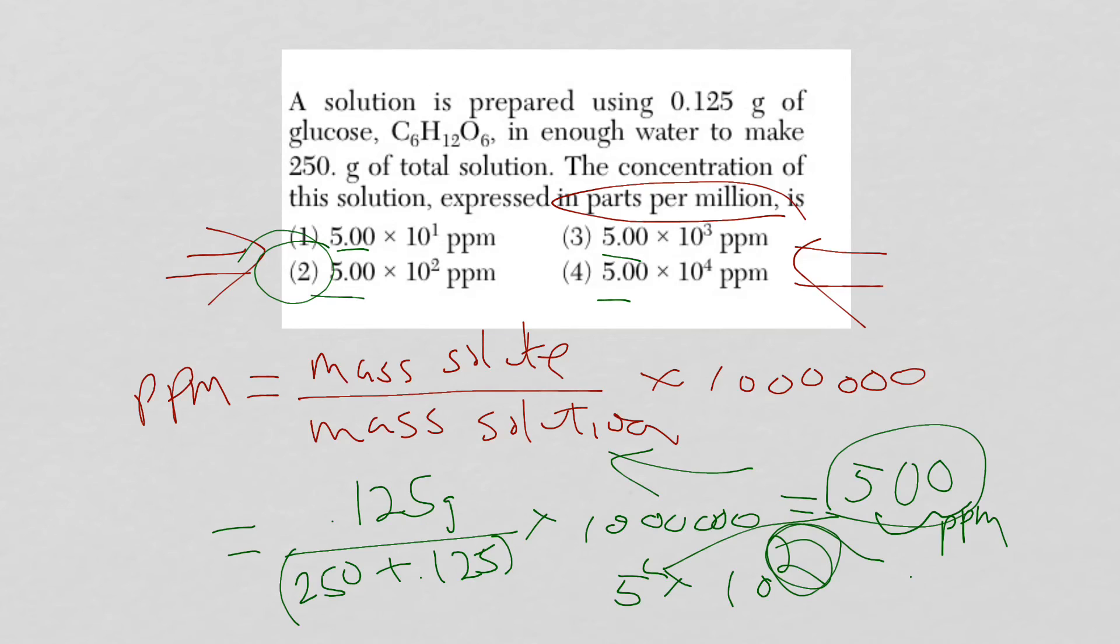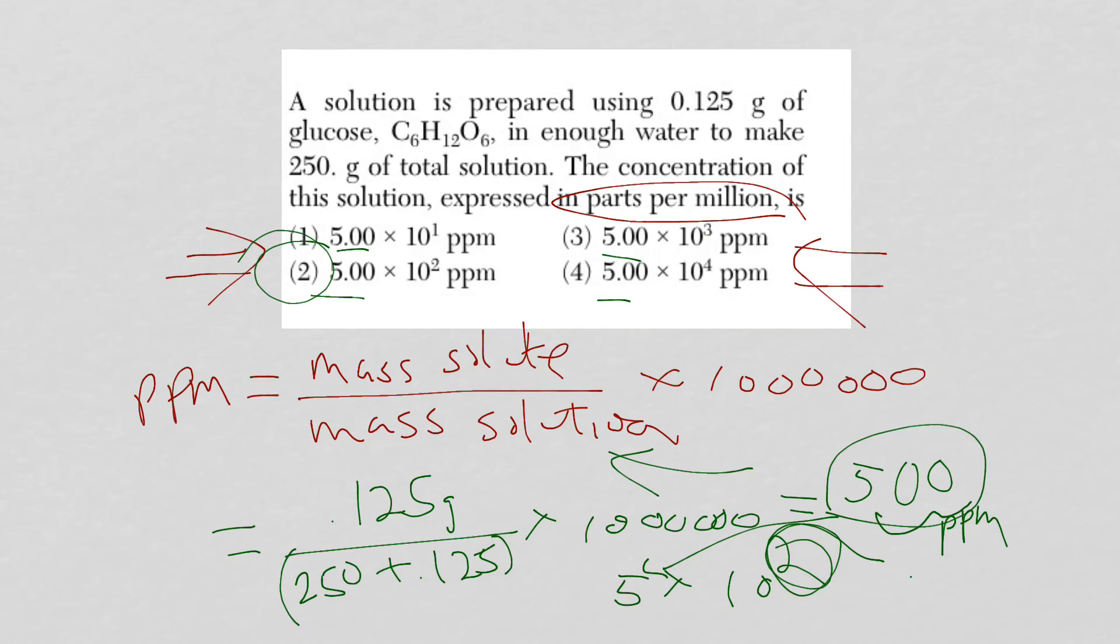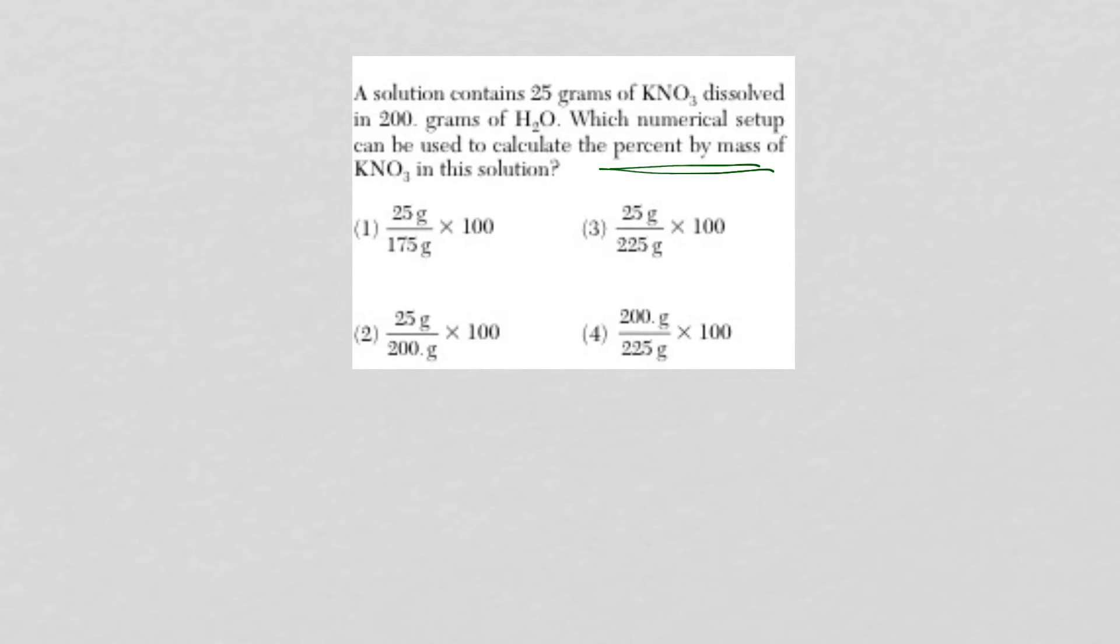So percent by mass. Well, let's go back, first of all, to reference table T. Here is our percent composition calculation. So our part is going to be our solute and our whole is going to be solution. So basically, it's just like parts per million. But instead of multiplying by a million, we're just multiplying by a hundred. It's really parts per hundred.